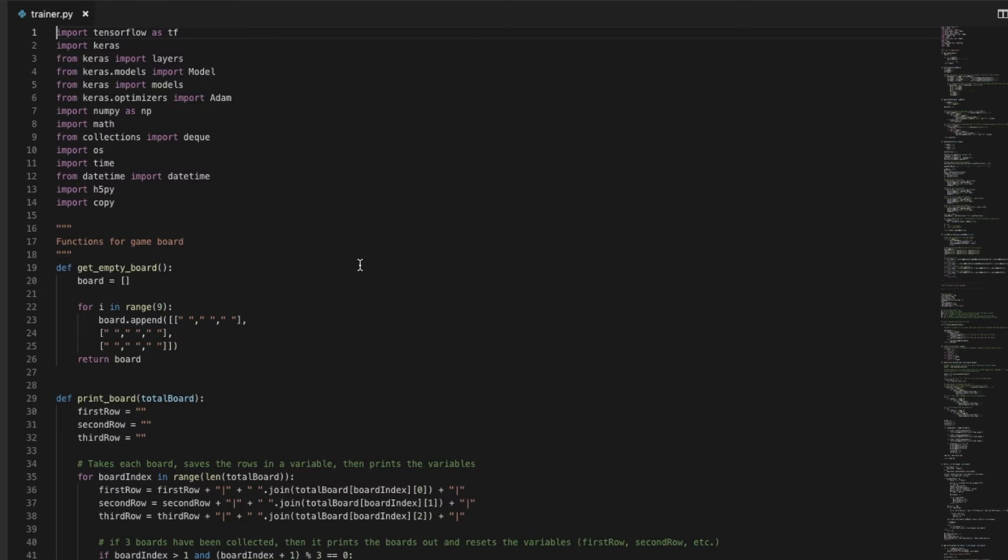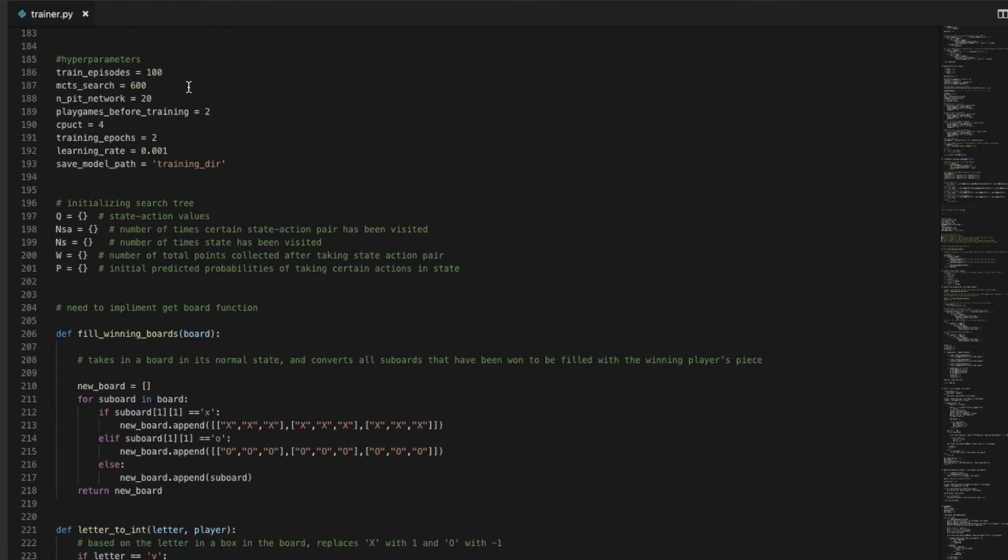So here's the code I actually used to train the model. I had to play around a lot with these hyperparameters. So the model was trained for 100 episodes of self-play. Every episode, the model played two games of self-play, and for every game of self-play, in order to decide which move to take, it made 600 Monte Carlo tree search simulations. I found that the deeper this tree search, the better the policy vector was, but it also took longer to train. So I think 600 was a decent amount. I also played around with CPUCT. I found that four tends to be pretty good because it allows the model to explore a sufficient amount of states.